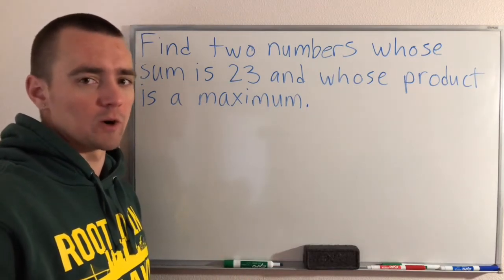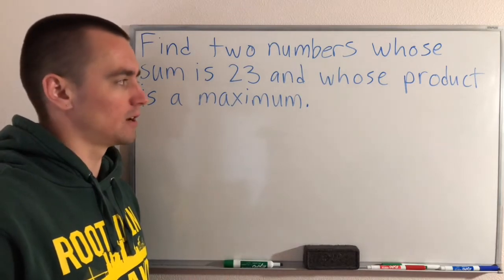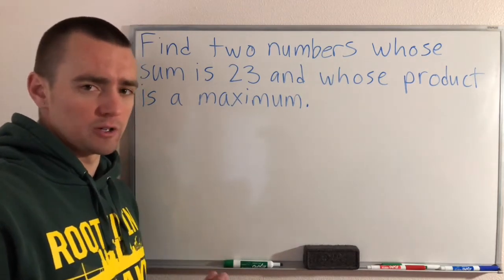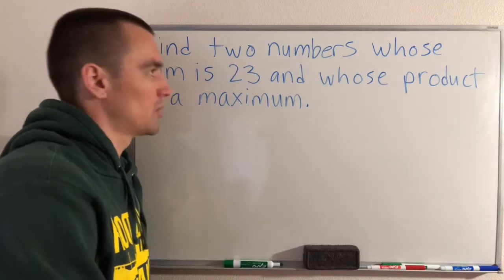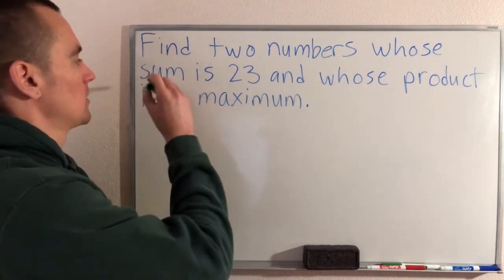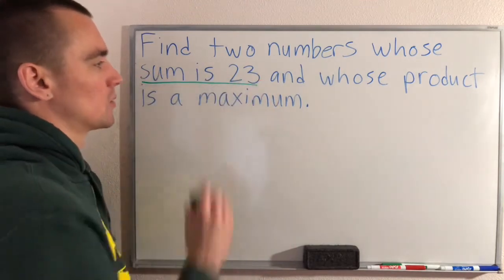I've done a problem pretty similar to this so I'm going to go through this a bit quicker. If you want to check that out I'll link to it here. Basically we just need to come up with our two equations. One is going to be our restriction, which is pretty much given by the fact that we know that the sum of these two numbers is 23.